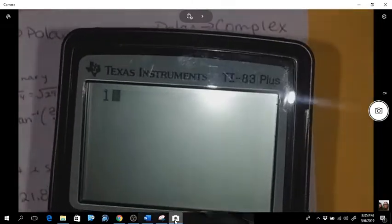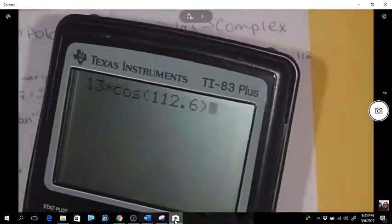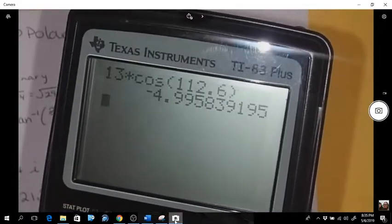So we have 13 times cos of 112.6, and we get a negative 5.